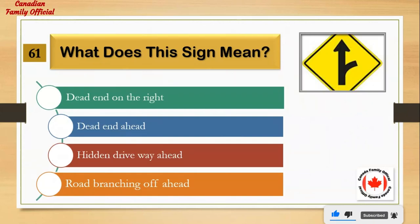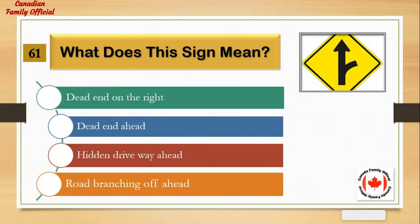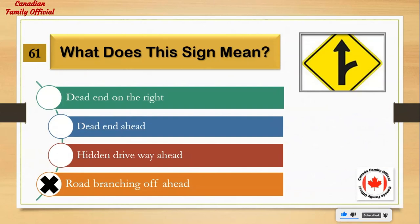What does this sign mean? Number 1: dead end on the right. Number 2: dead end ahead. Number 3: hidden driveway ahead. Number 4: road branching off ahead. And the answer is: road branching off ahead.